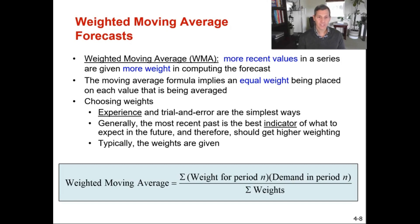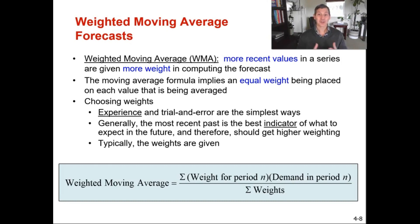Now let's go over weighted moving averages. This is where more recent values in a time series are given more weight in computing the forecast. We're going to put more weight on the most recent periods, which will help our forecast adapt more quickly to changes. The regular moving average gave everything an equal weight. With a weighted moving average, we put more weight on the most recent value. The weights are given to you in this course, but in practice, trial and error determines which weights work best for your organization.